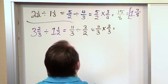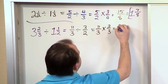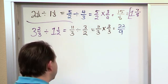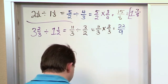And then we multiply. 11 times 2 on the top is 22, 3 times 3 is 9. So we have 22 over 9. So again, we think we're done, but then we see, wait a minute, this is an improper fraction.